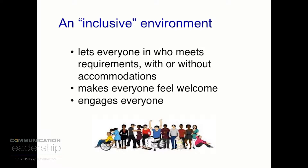So what does universal design mean? I think we know better after Kat's great talk on what it means to be an inclusive environment. What does it mean here at the university? It means everyone who meets the requirements, with or without accommodations, is allowed in — inside that circle. We need to make sure that this facility is accessible to someone who has a disability, but also other characteristics that might make them not accessible in some other environments. It's also important to make everybody feel welcome once they get in the room, and be part of the group. And then we engage everyone.